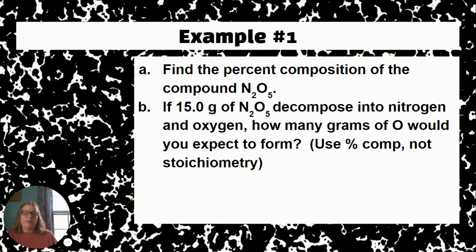So there are two examples that I want to walk through with you, and you can pause the video or write these down or do whatever you want to do, but then I'll do a separate video to work through the answers for these. So for example number one, A, I want you to find the percent composition of the compound N2O5, and what I mean by that is I want you to find the percent N and then find the percent O in your compound.